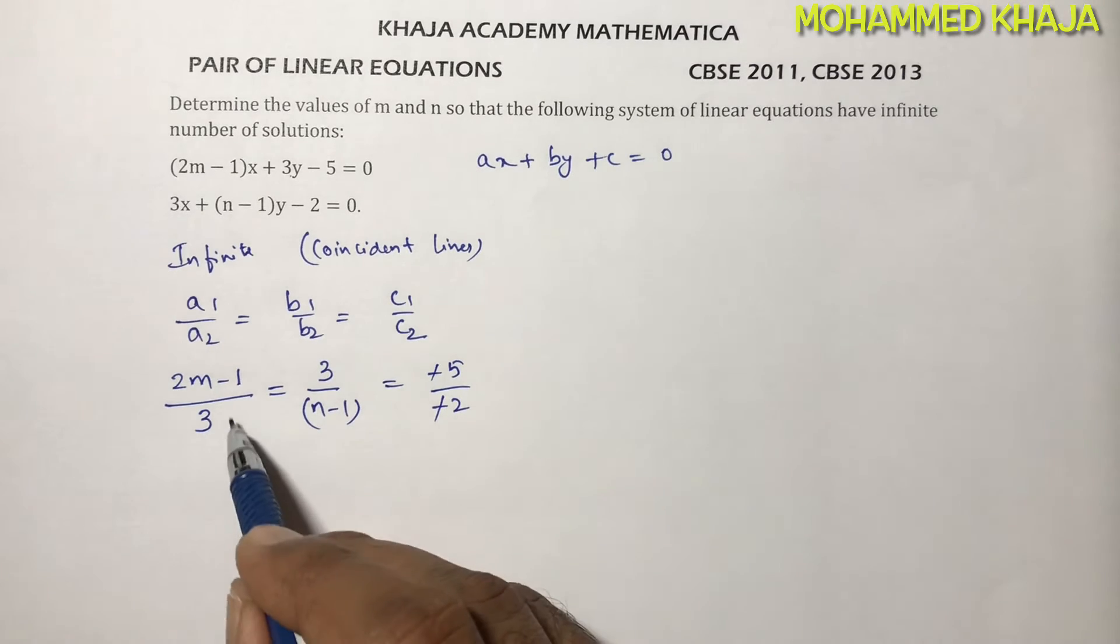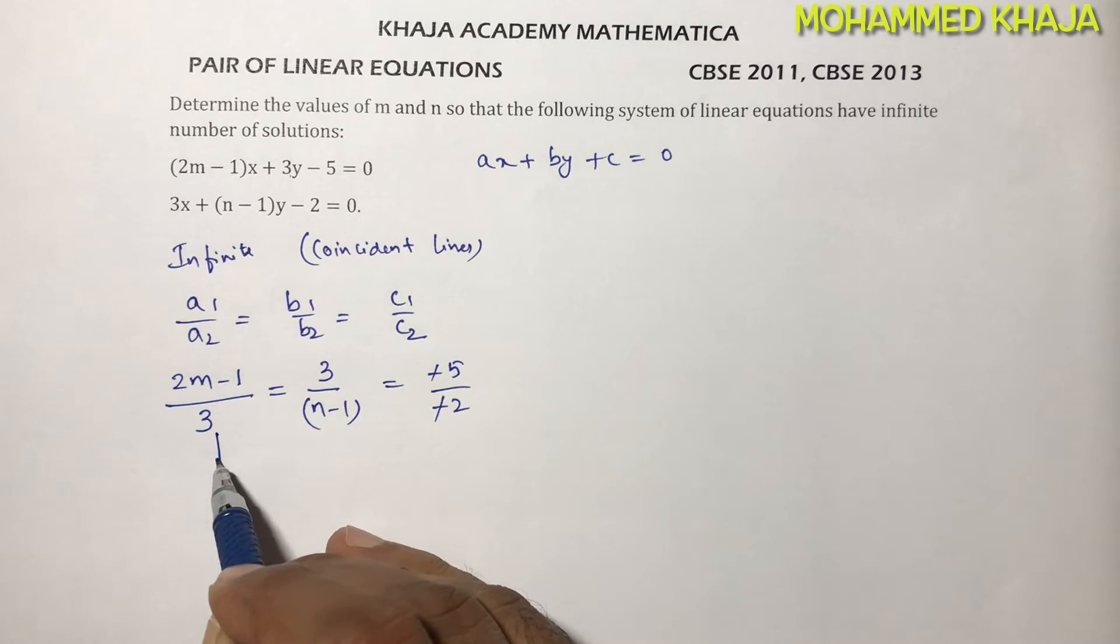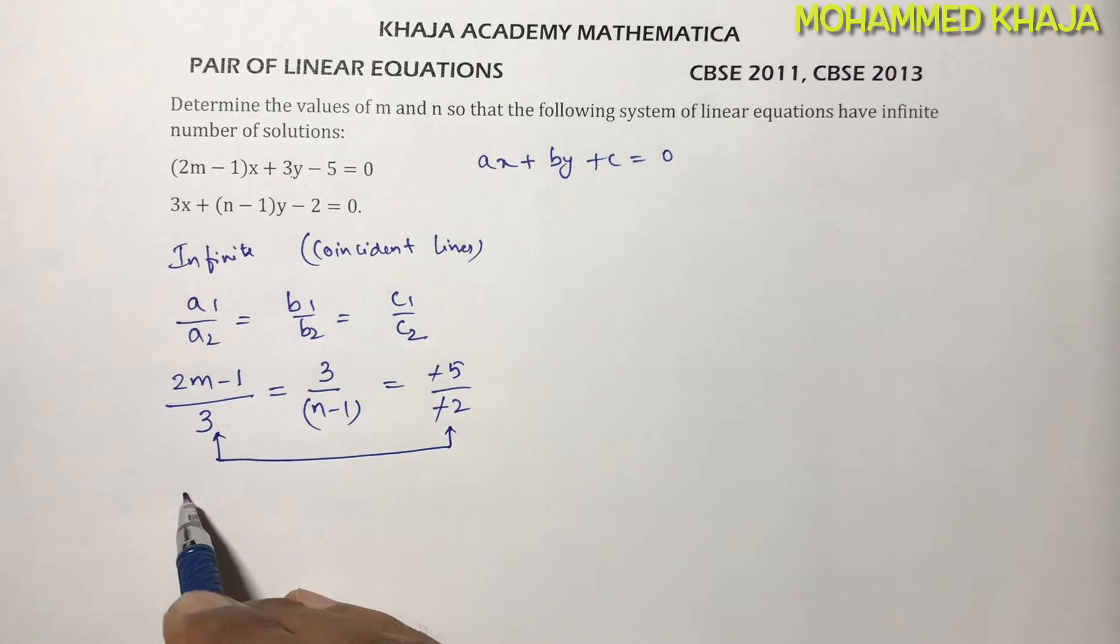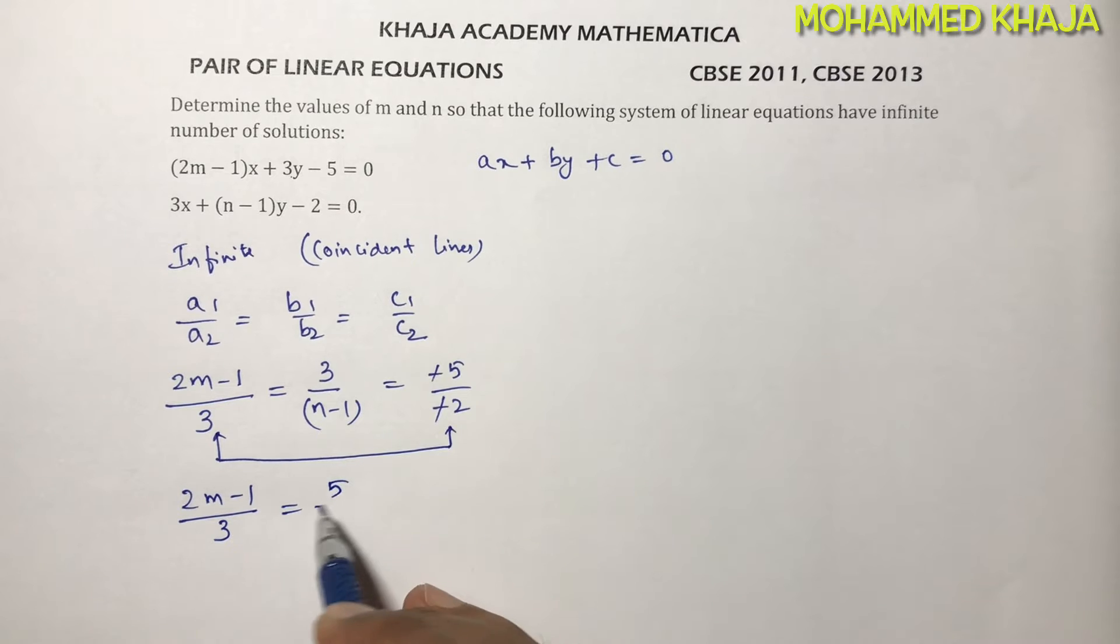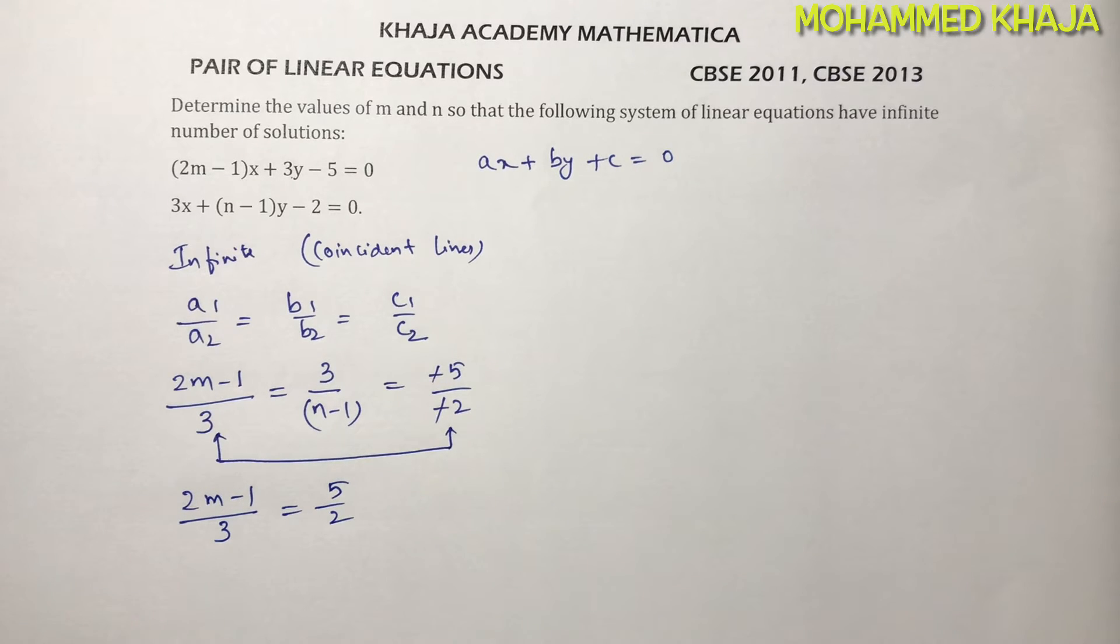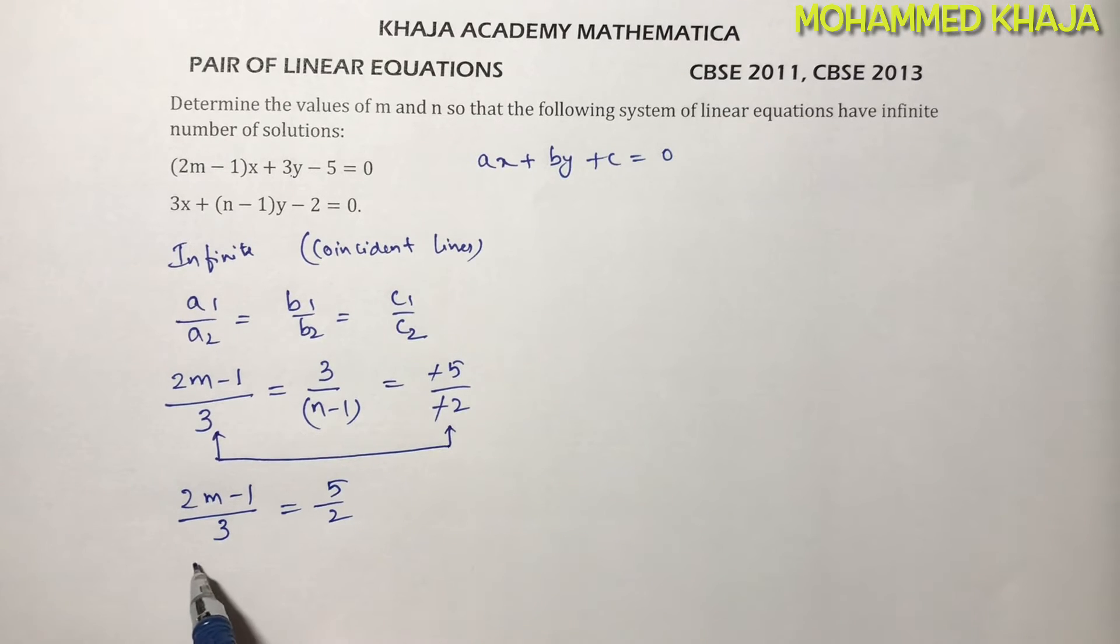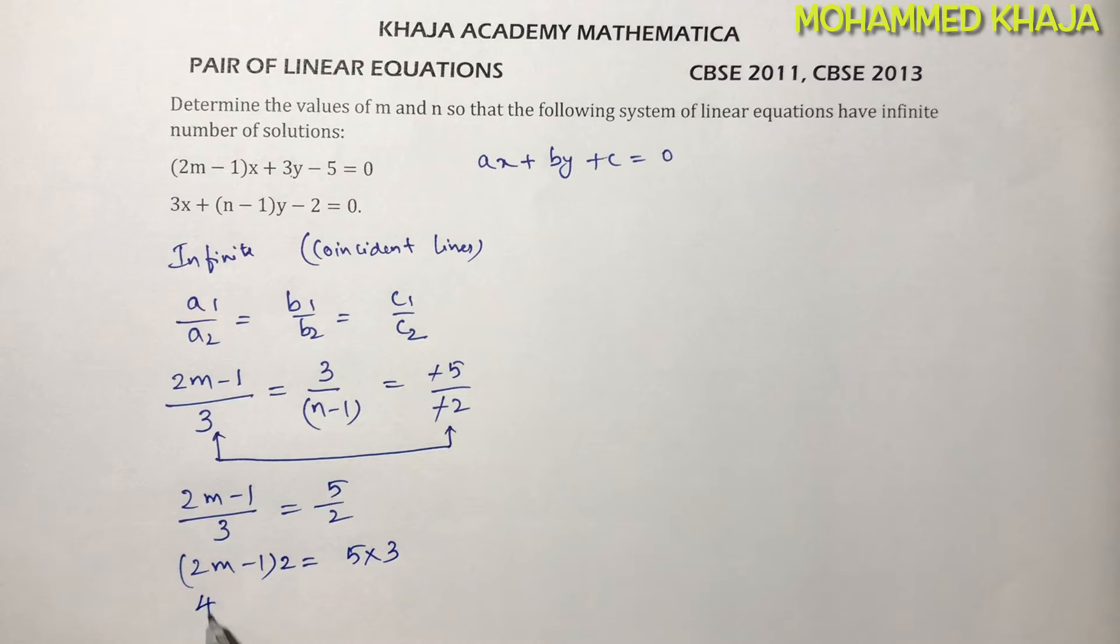Equate the first one with the first one. So 2m minus 1 by 3 equals 5 by 2. Cross multiply: 2m minus 1 times 2 equals 5 times 3. 2 times 2 is 4m minus 2. 5 times 3 is 15.